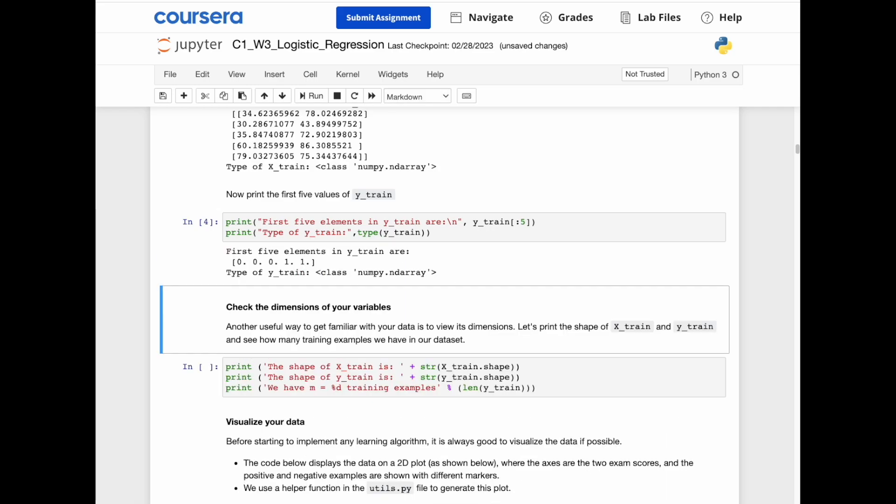And as for y-train, it looks like that. And so the zero tells us that the student has not been admitted to the university, and the one says that a student has been.